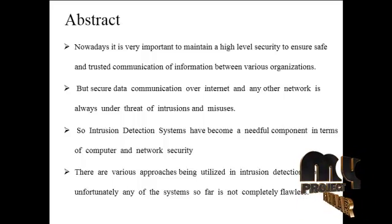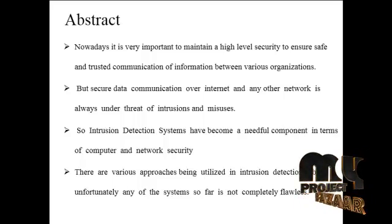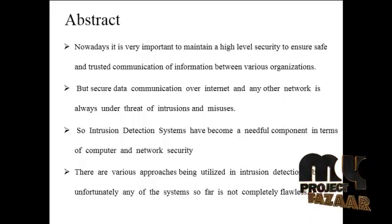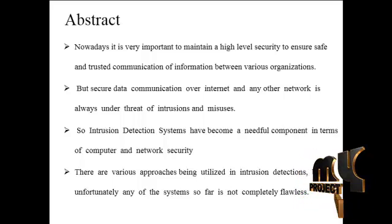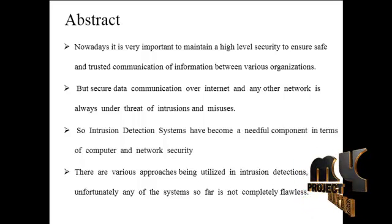The GA detects anomalies using information theory so that network features can be identified. Based on mutual information detection between network features and attack types, linear structural rules are derived. The GA using mutual information with linear rules is very efficient as it reduces complexity and achieves a high detection rate, using classification rules with a support vector framework.